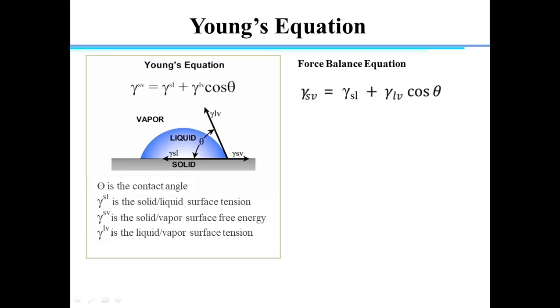So, the surface tension of solid-vapor is going to be equal to liquid-vapor plus liquid-solid cos θ. Cos θ is equal to difference in surface tension of solid-vapor minus liquid-solid divided by liquid-vapor.